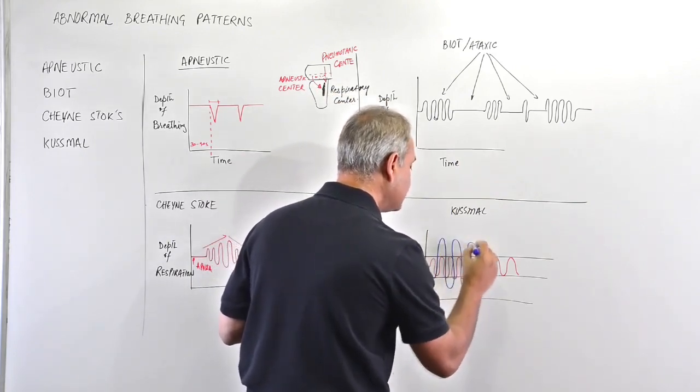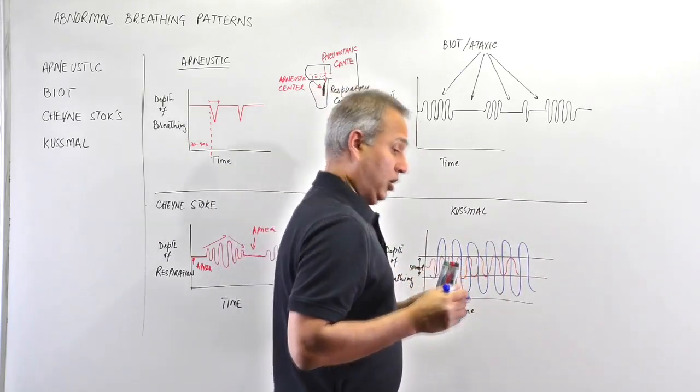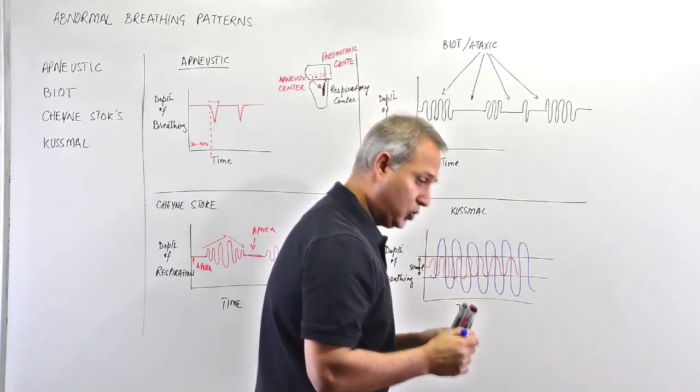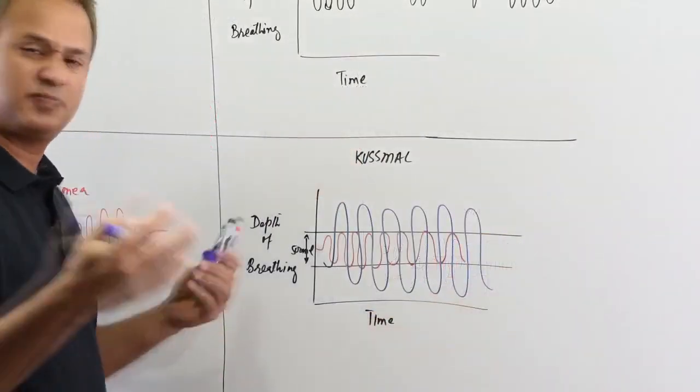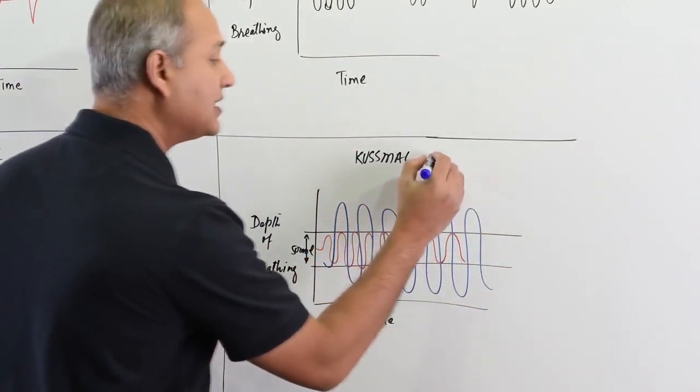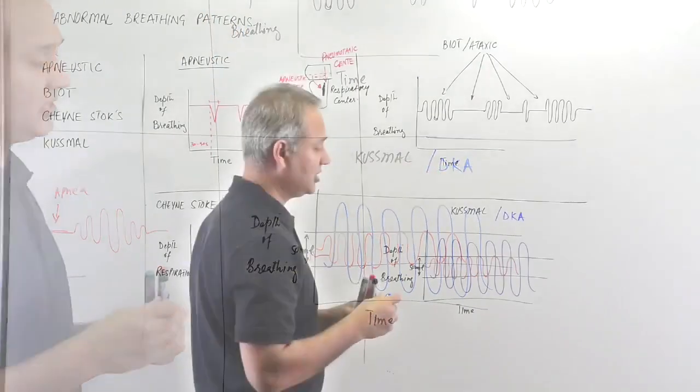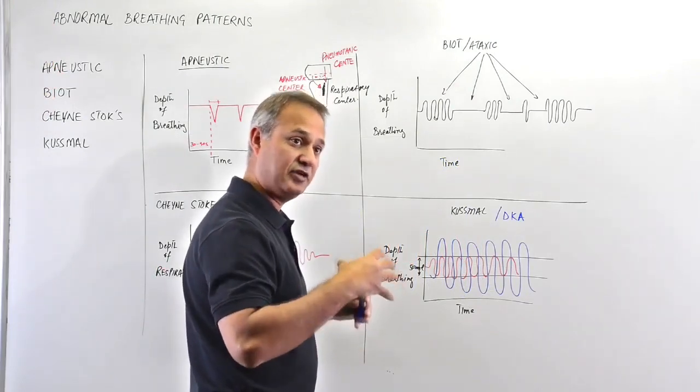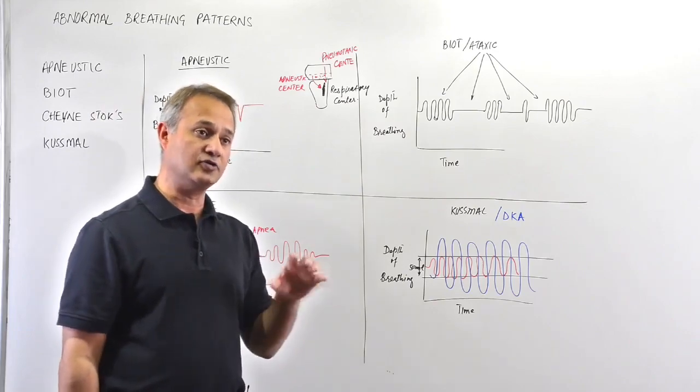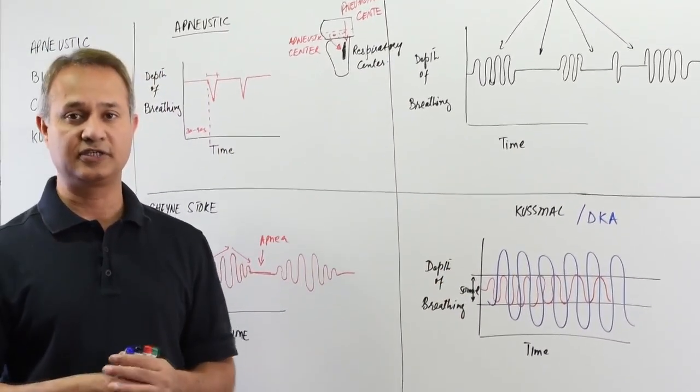So diabetic ketoacidosis - if you superimpose labored breathing like this, that is continuous breathing. The patient may be actually unconscious as well at that time. Diabetic ketoacidosis can cause Kussmaul breathing, which is labored and heavy breathing. So these are the various breathing patterns you should be aware of while doing physiology. We'll do more as we go into the pathology lectures. Thank you.